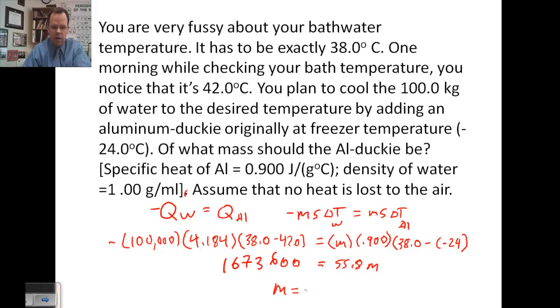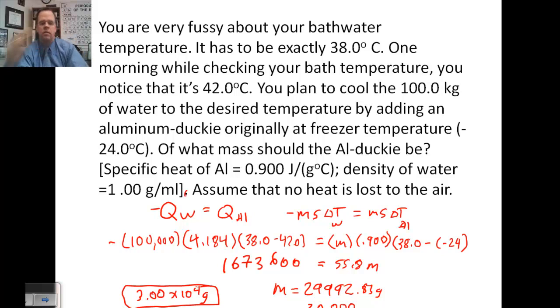We would need our aluminum ducky to have a mass of 29,992.83 grams. And we can use three significant figures here because that's the smallest number. So we would have 30,000, which is one significant figure, so we need to put this in scientific notation. 3.00 times 10 to the fourth grams, or 30 kilogram ducky.